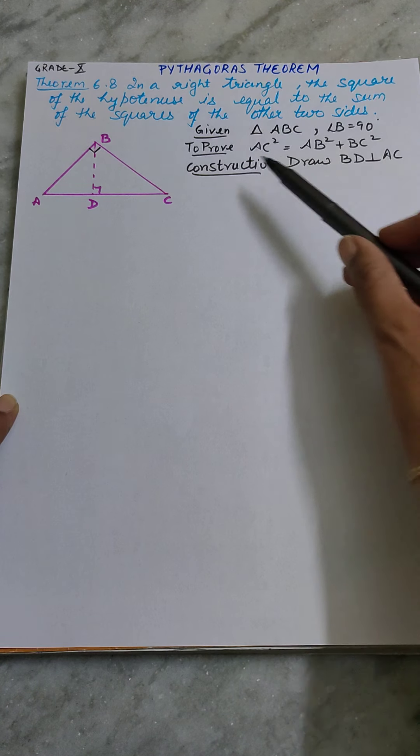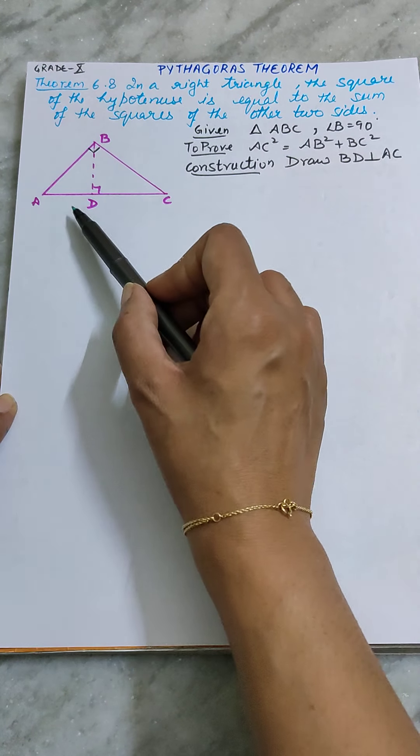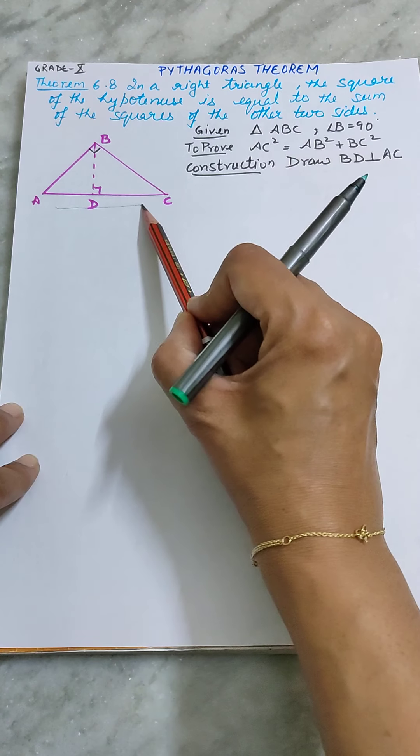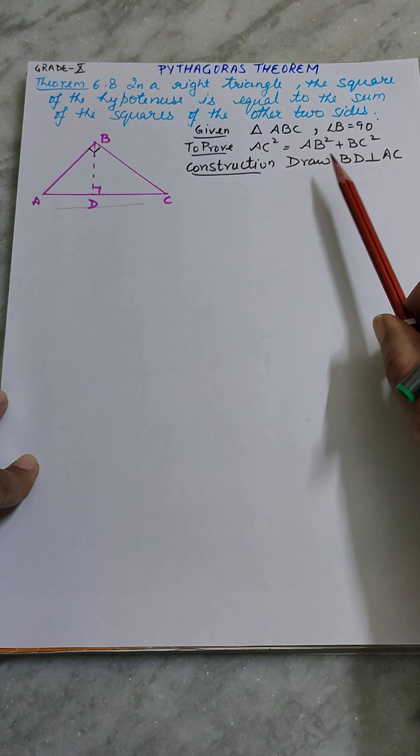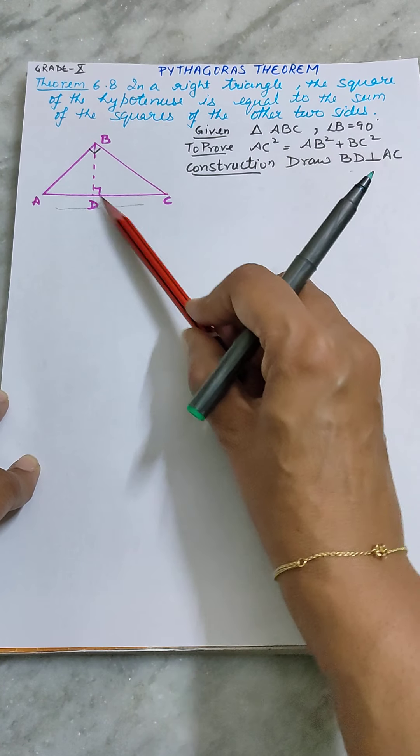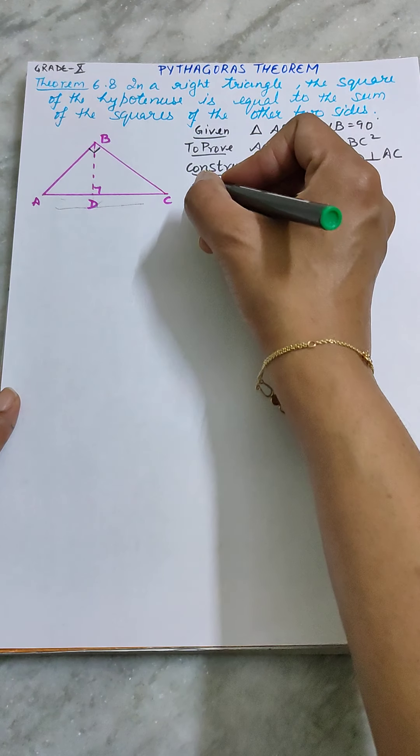As I have mentioned, ABC angle B is 90 degree and then AC, 90 degree ke opposite mein, we all know it is the longest side. And longest side is known as hypotenuse. This is my hypotenuse. Then we have to draw construction here. In construction we will draw BD, ek perpendicular draw karenge AC pin. Now write down proof.